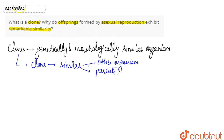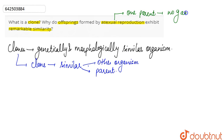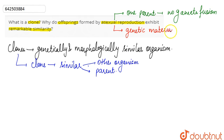Now the next part of the question: why do offspring formed by asexual reproduction exhibit remarkable similarity? In the case of asexual reproduction, only one parent is involved and there is no gamete fusion. So the genetic material flows to the progeny from just one parent.